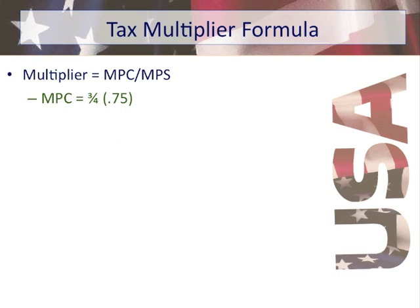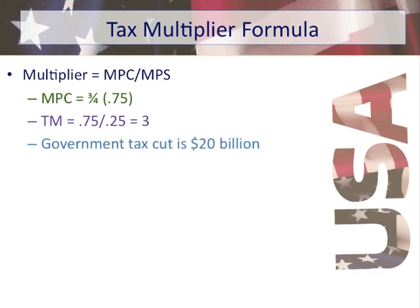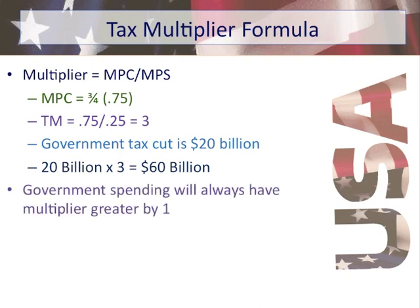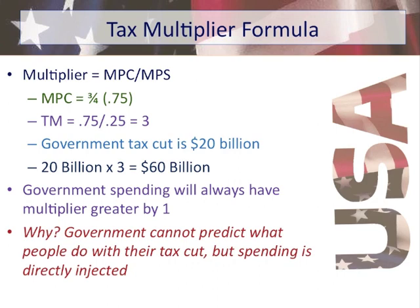The tax multiplier formula is a little different: we take MPC over MPS. With an MPC of 0.75, that's 0.75 over 0.25, giving us 3. The tax multiplier is always 1 less than the spending multiplier. So if the spending multiplier is 4, the tax multiplier is 3. For a $20 billion tax cut with a multiplier of 3, it multiplies to $60 billion — less than the spending multiplier. Government spending always has a slightly bigger impact because that money has been spent 100% at least once.